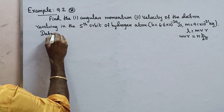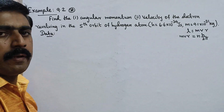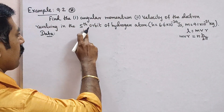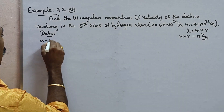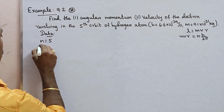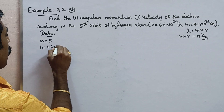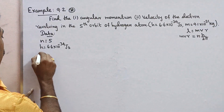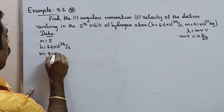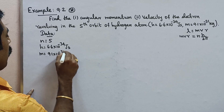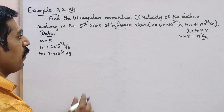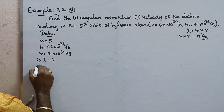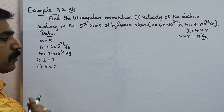Data given: Number of orbit n is equal to 5. H is equal to 6.6×10⁻³⁴ joule-second. Mass of an electron M is equal to 9.1×10⁻³¹ kilogram. Question: first, angular momentum L equals question mark, and the second one, velocity V equals question mark.